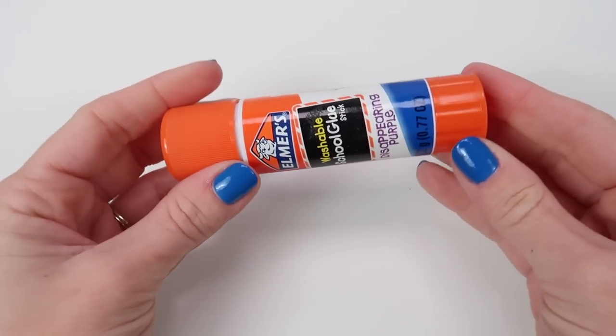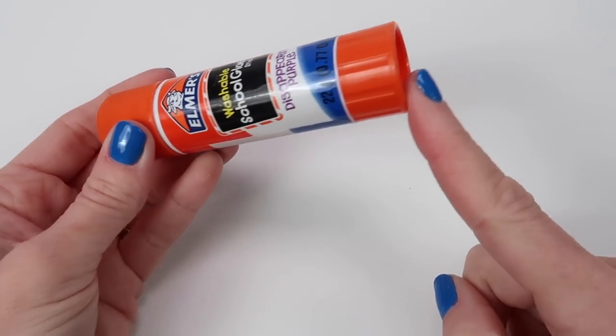Now take an empty jumbo glue stick, keep the cap, and cut off the bottom.